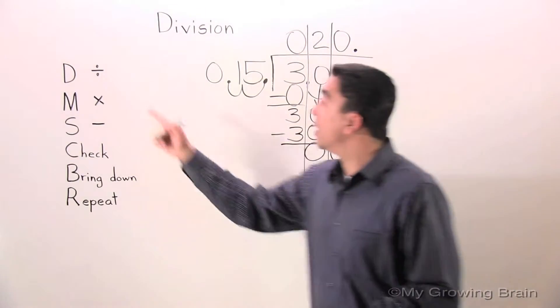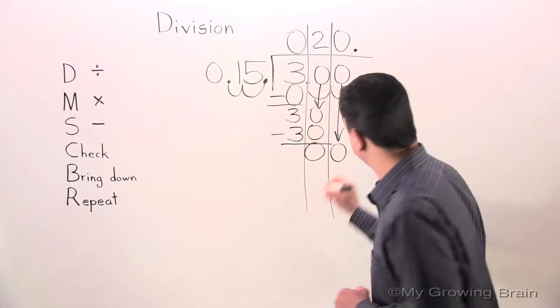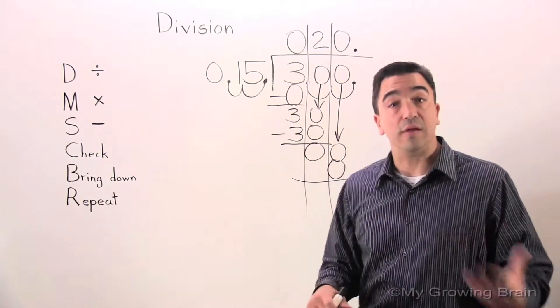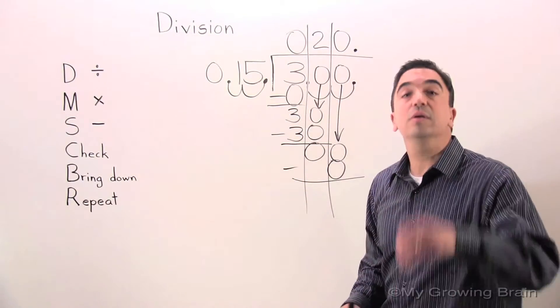Next step: Multiply. 15 times 0 is 0. Next step: Subtract. 0 minus 0 is 0.